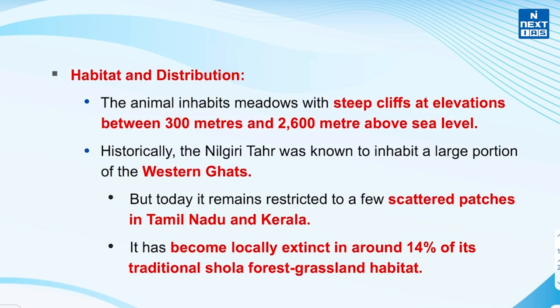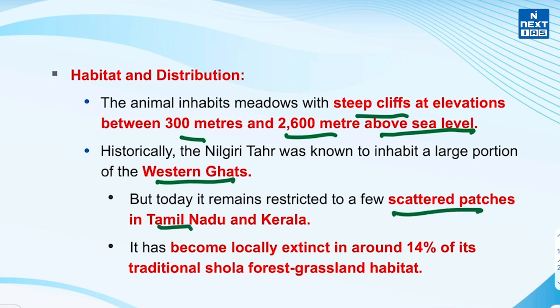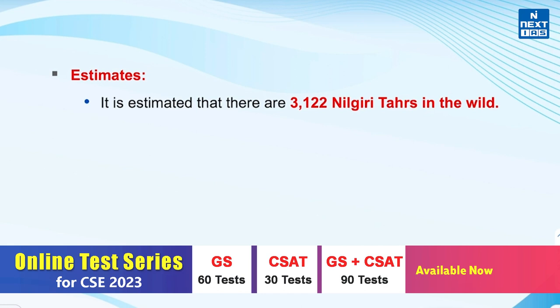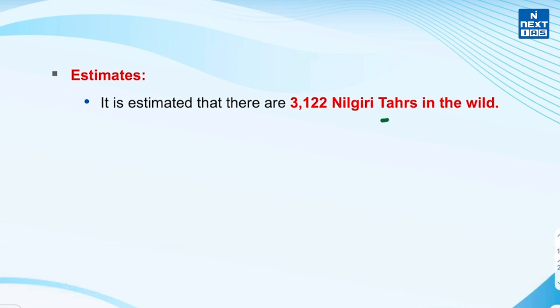Looking at its habitat and distribution, it inhabits meadows with steep cliffs at elevations between 300m and 2,600m above sea level. Historically it was known to inhabit a large portion of the Western Ghats, but today it remains restricted to a few scattered patches in Tamil Nadu and Kerala. It has become locally extinct in around 14% of its traditional Shola forest grassland habitat. There are currently 3,122 Nilgiri Tahrs in the wild.